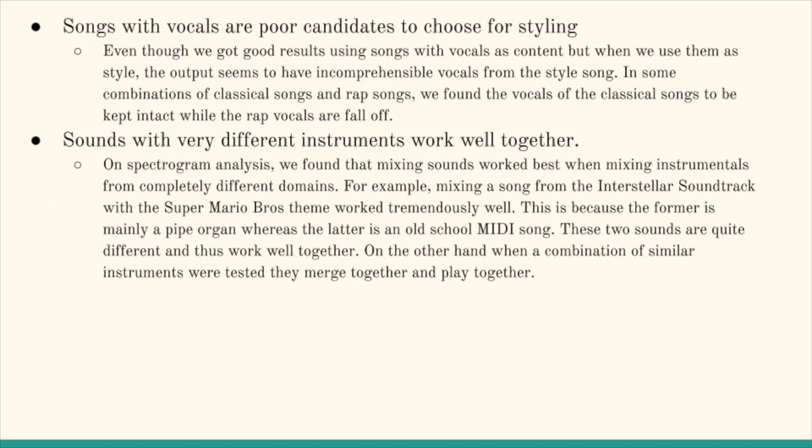Additionally, songs with vocals were poor candidates to choose as the style image because the style image was the one that was warped the most to map onto the content image. So those vocals got warped. And sounds with very different instruments worked well together because they were represented spatially in our spectrograms in very far apart locations if they were different noises. And so the model didn't really have to choose between them and average and create noise that wasn't really realistic or computer generated. Whereas if they were similar, it would average.